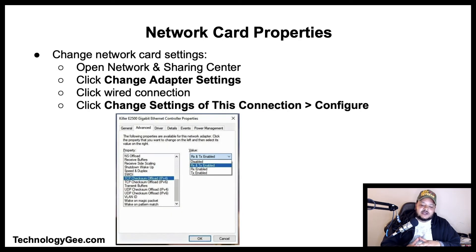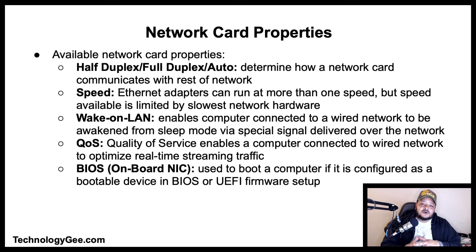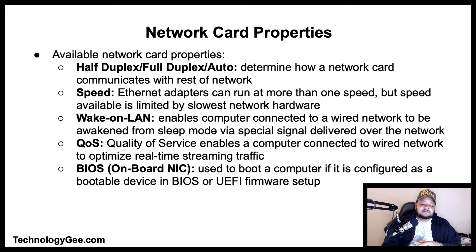Let's talk about network card properties. If you need to change the settings of a wired network adapter or NIC, go to Network and Sharing Center, click Change Adapter Settings, click the wired connection, click 'Change settings of this connection,' and hit Configure. Available network card properties include half duplex, full duplex, and auto. Half duplex sends and receives data in separate operations. Full duplex enables the adapter to send and receive data at the same time, which doubles the network speed. Auto settings allow the adapter to determine the best setting.